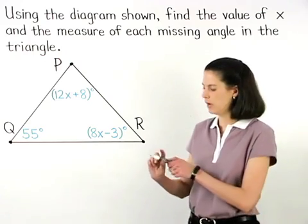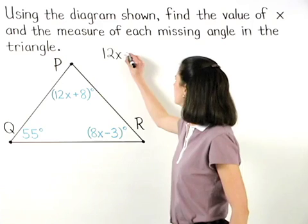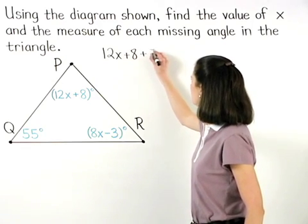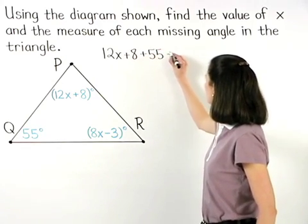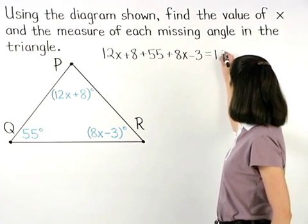So we can set up the equation: 12x plus 8 plus 55 plus 8x minus 3 equals 180.